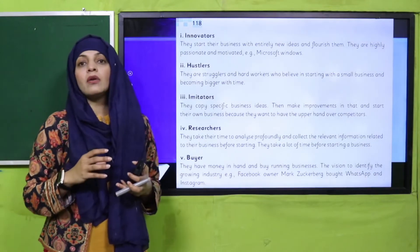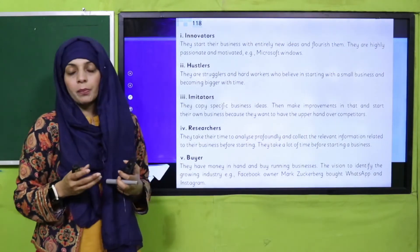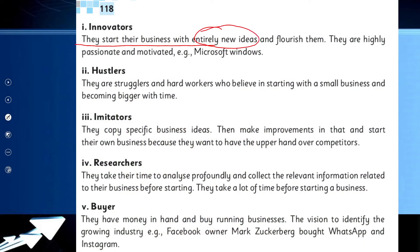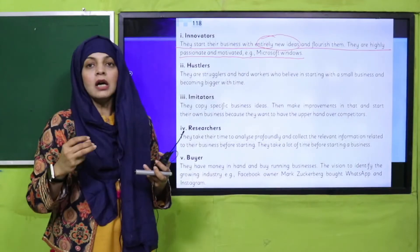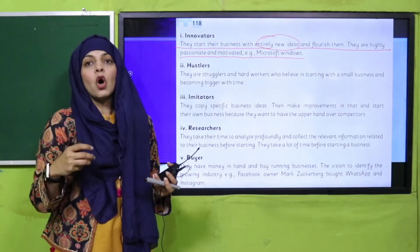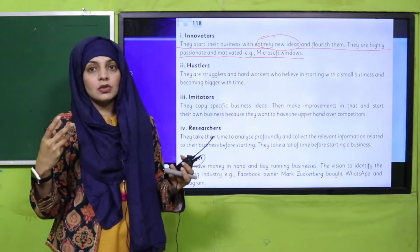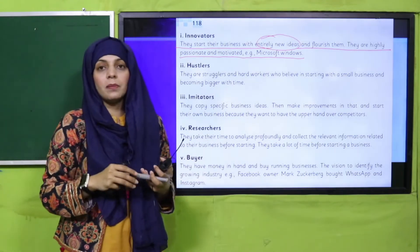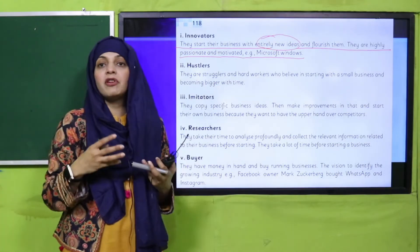My dear students, who are innovator entrepreneurs? They start their business with entirely new ideas and flourish them. They are highly passionate and motivated. For example, Microsoft Windows — the person who created Microsoft Windows, it was a completely new idea in the market, and he worked day and night on it, and it flourished. Now everybody has Microsoft Windows in their systems.